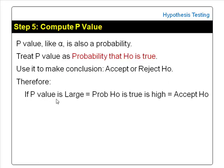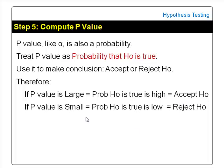If the p-value is large, it means that the probability that the null hypothesis is true is high. In this case, we will accept the null hypothesis. If the p-value is small, it means that the probability that the null hypothesis is true is low, and in this case, we will reject the null hypothesis.